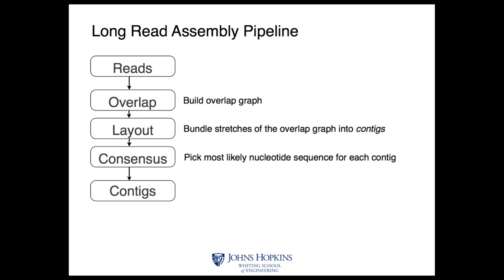The methods used for long reads really have their origin in assembling Sanger sequencing data. The very first genomes were assembled essentially by hand by comparing gel images — you could do that for a viral genome. But when larger genomes were sequenced with Sanger, software-based assemblers were developed. The dominant paradigm was called overlap layout consensus assembly, or OLC. Since short read sequencing took over, long read sequencing is becoming popular again, and OLC-based assembly has seen a resurgence. The main assemblers for long reads like PacBio data are all based on this idea.